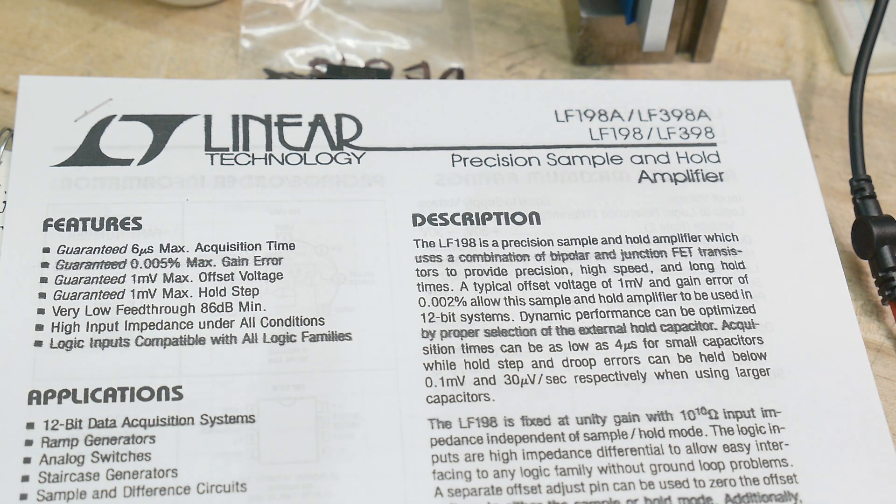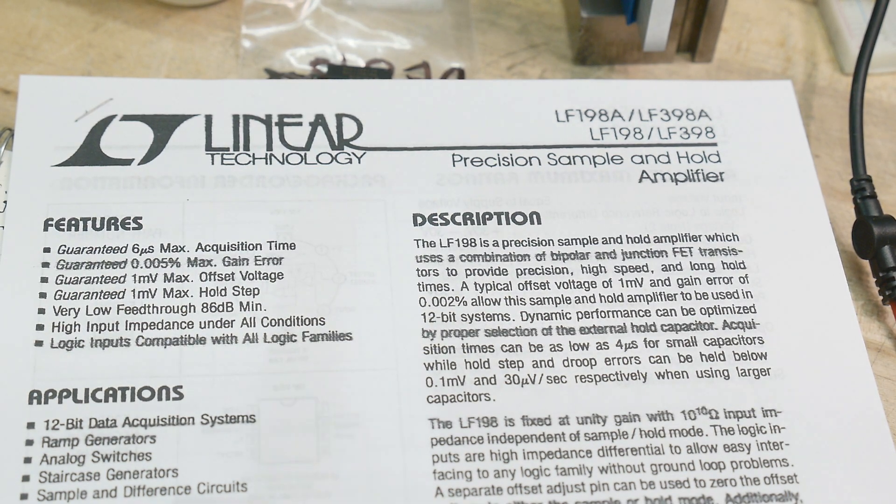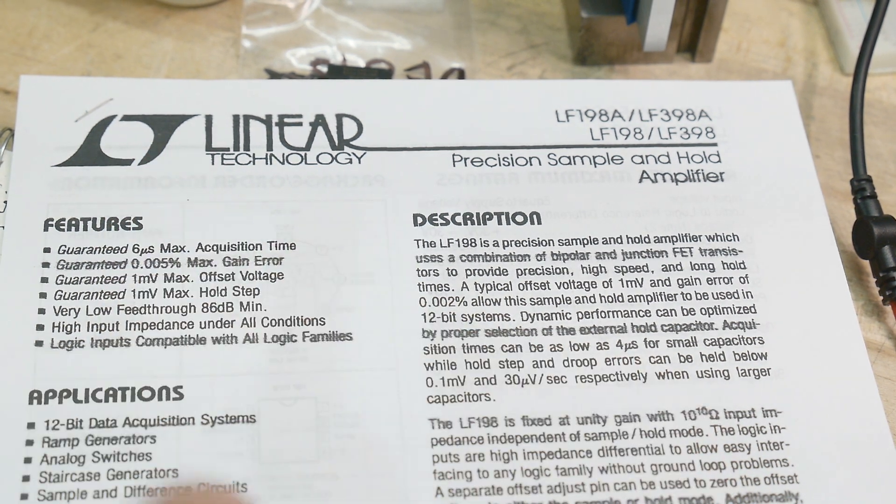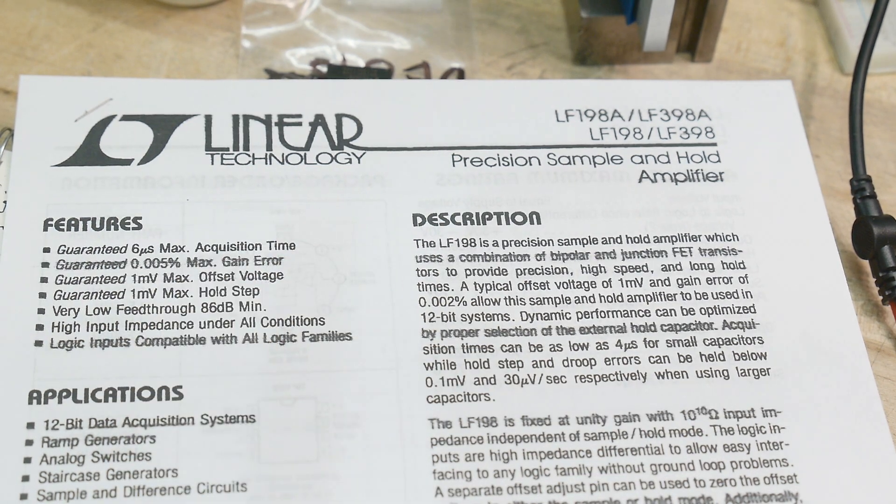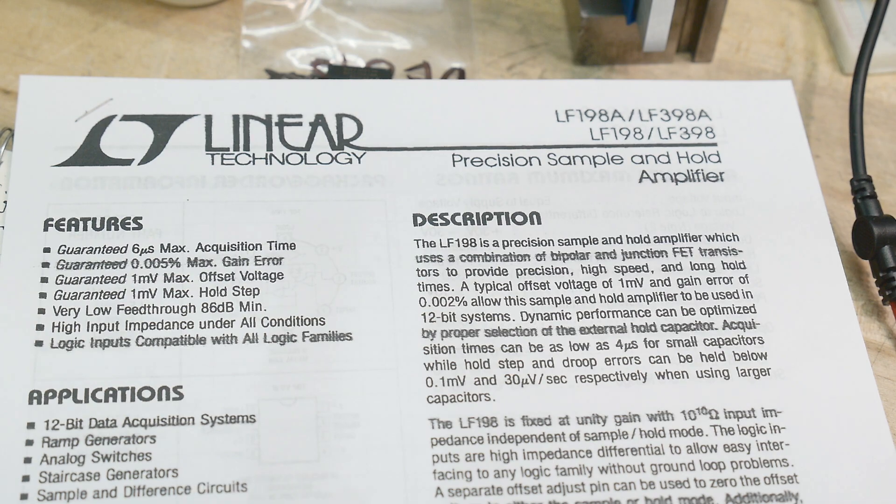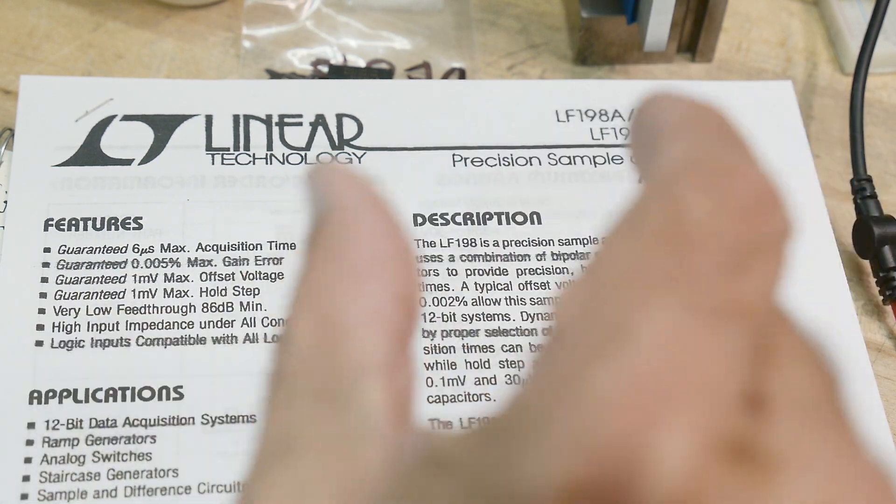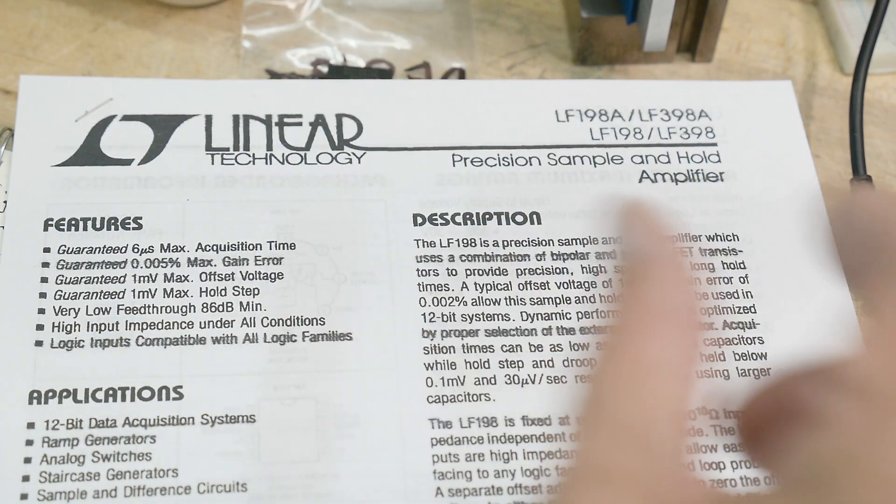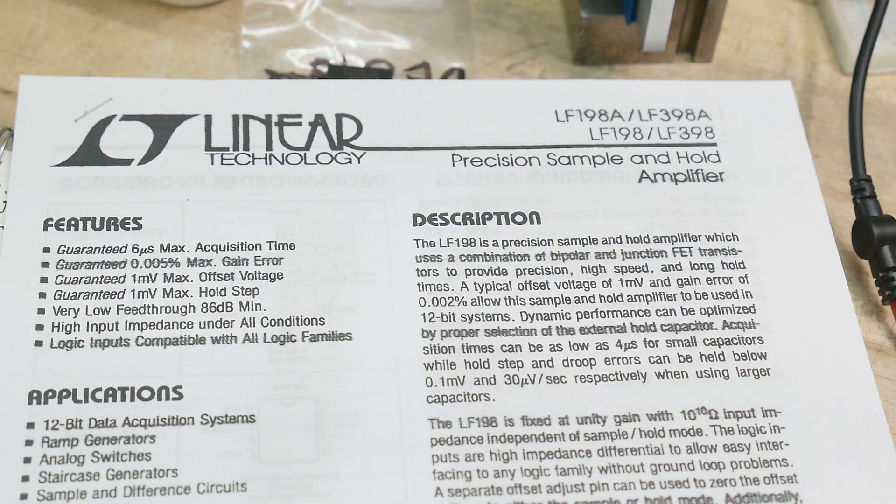An LF398 is a sample and hold amplifier. So what is a sample and hold? If you have some signal that's moving up and down and you want to just grab it, like grab it and let me know what that voltage is right where I grabbed it, you can store it on a capacitor. So you can take the waveform and take a chunk of it, put it on a capacitor, and then it'll stay on that capacitor, and then you can do things with it at your leisure.